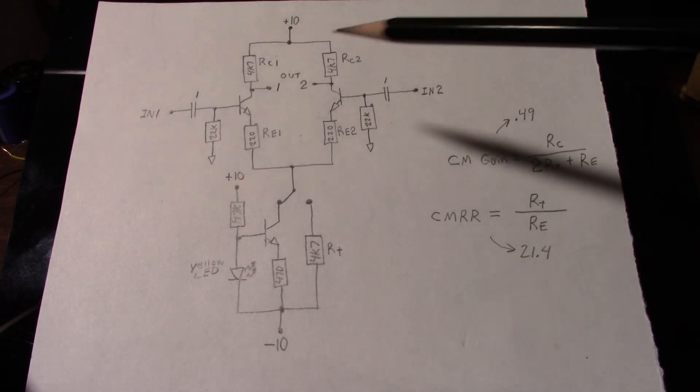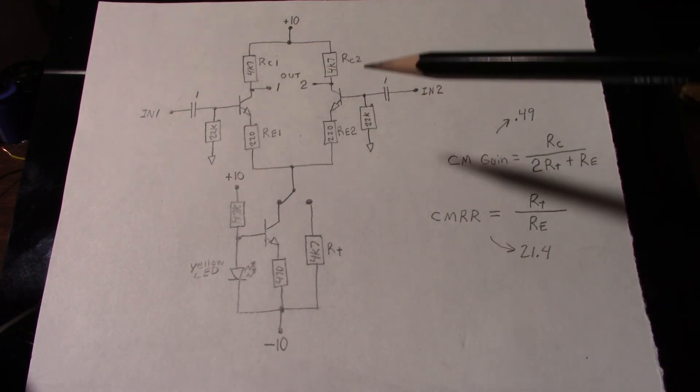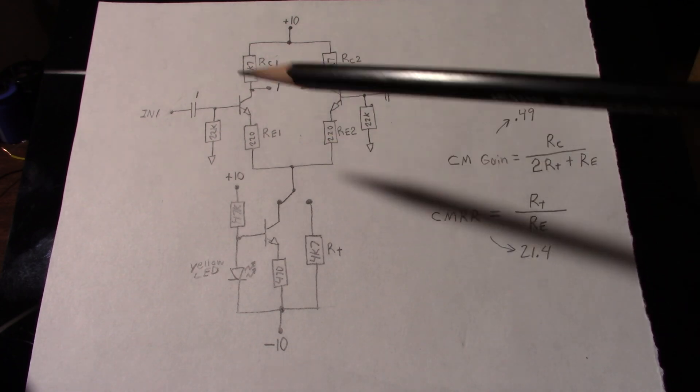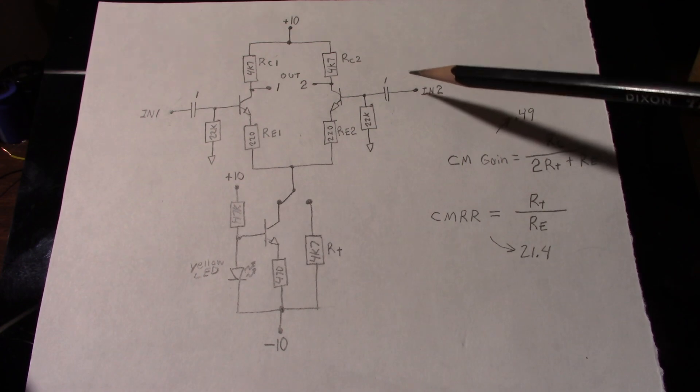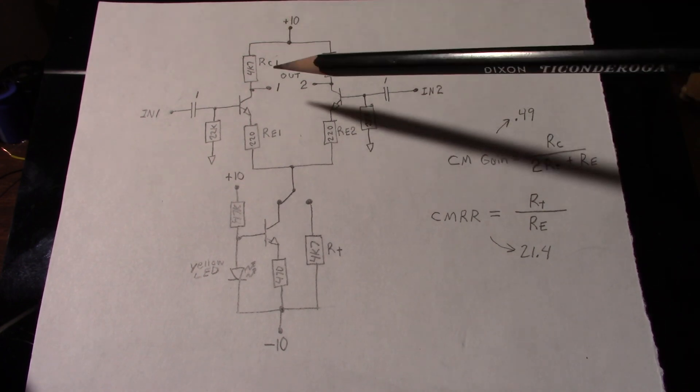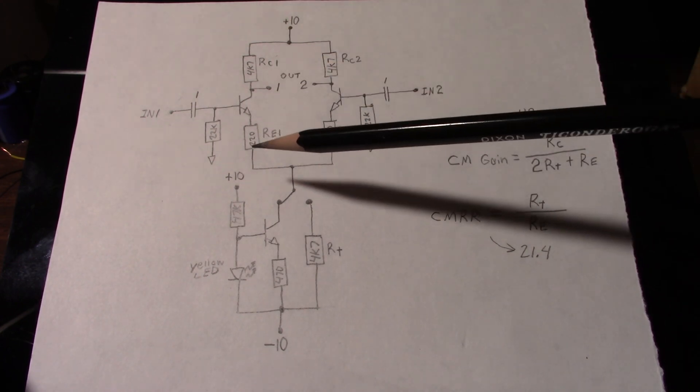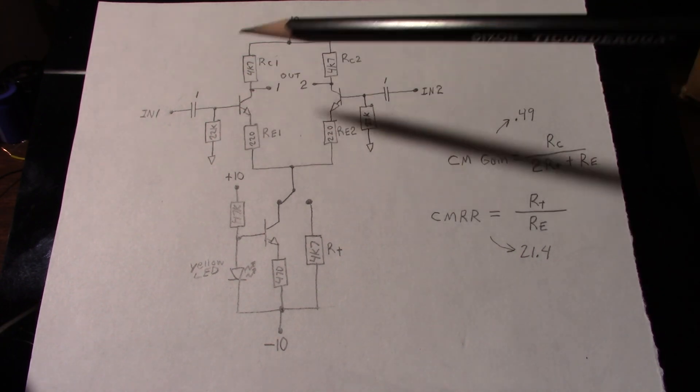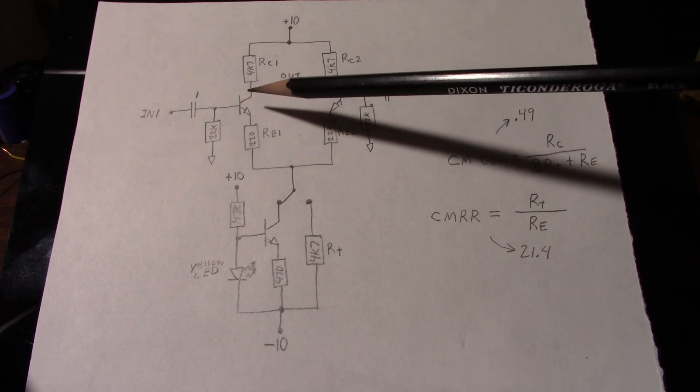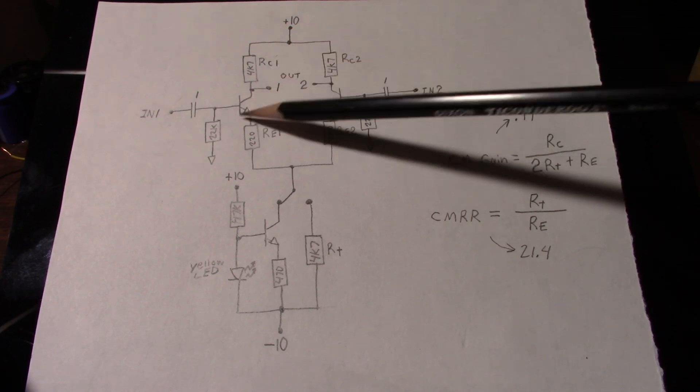Now I was looking at the circuit and I said, in common mode, which if you recall, that's when you put the exact same signal on both inputs and you get nothing out because it's a differential amplifier. It only amplifies the differences in the signal.